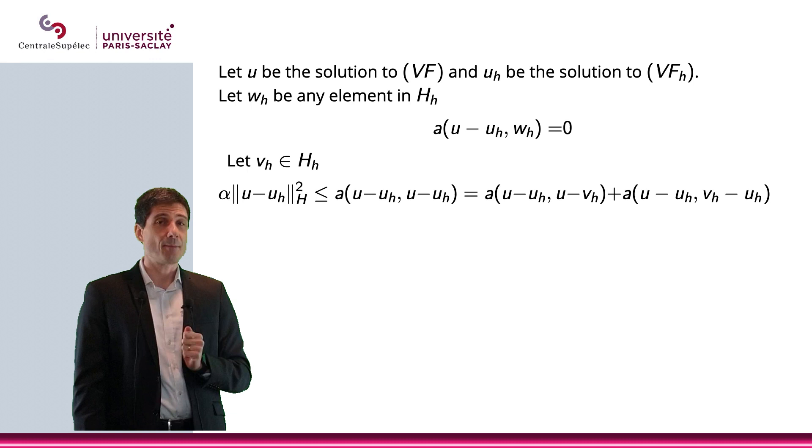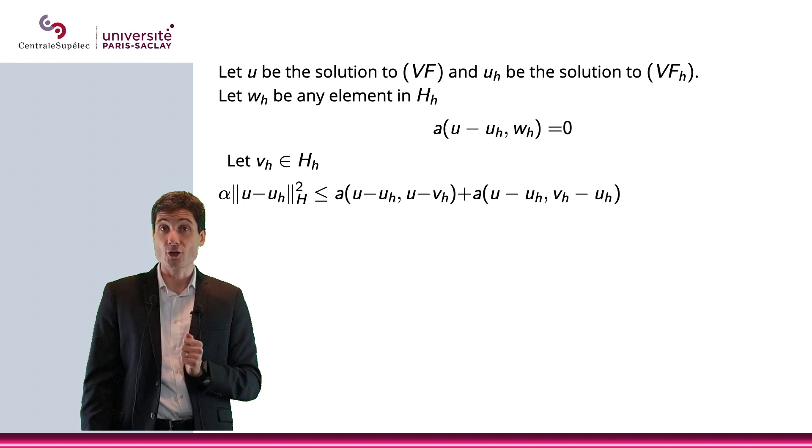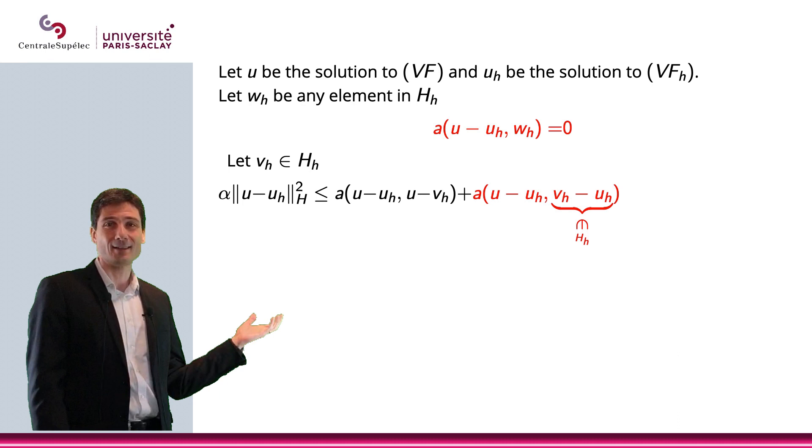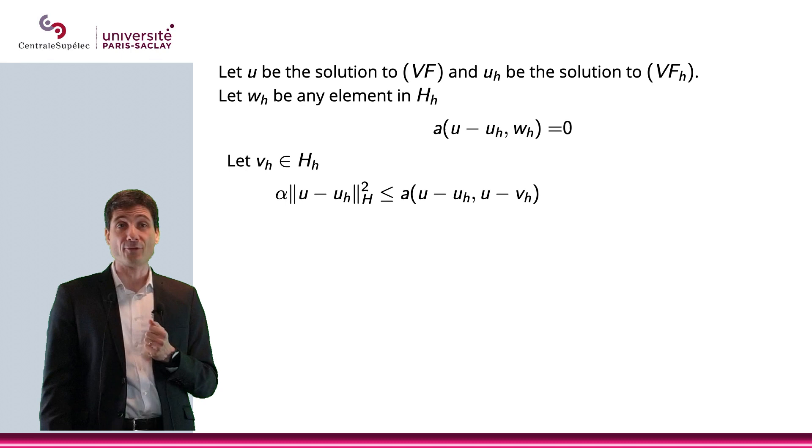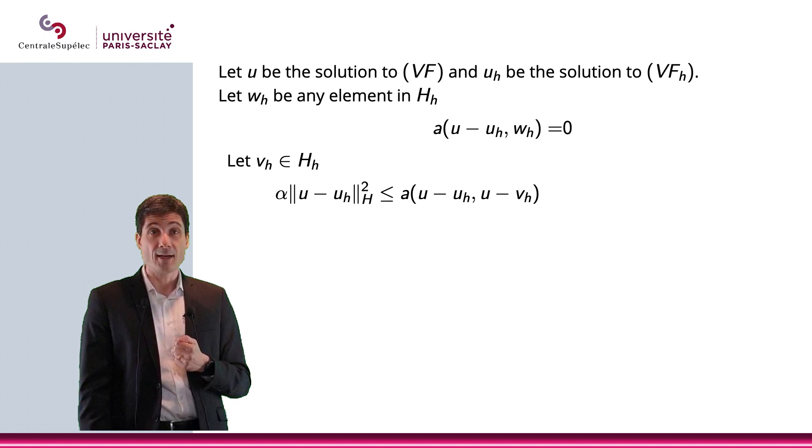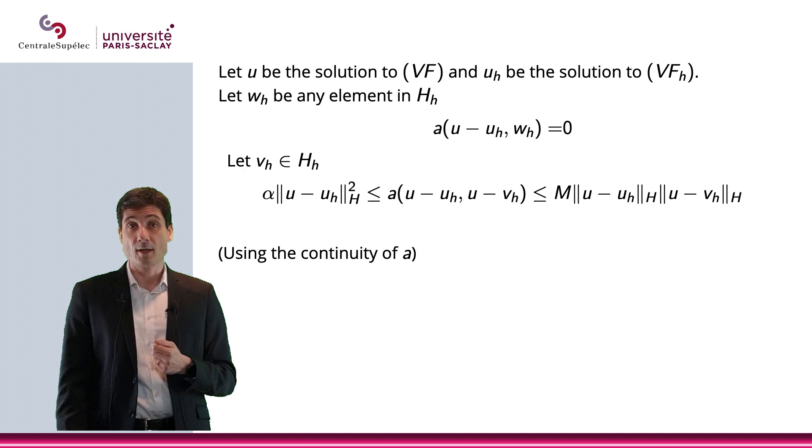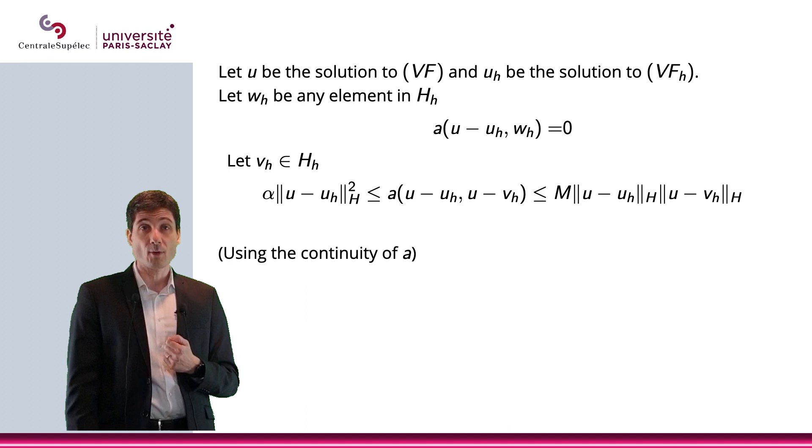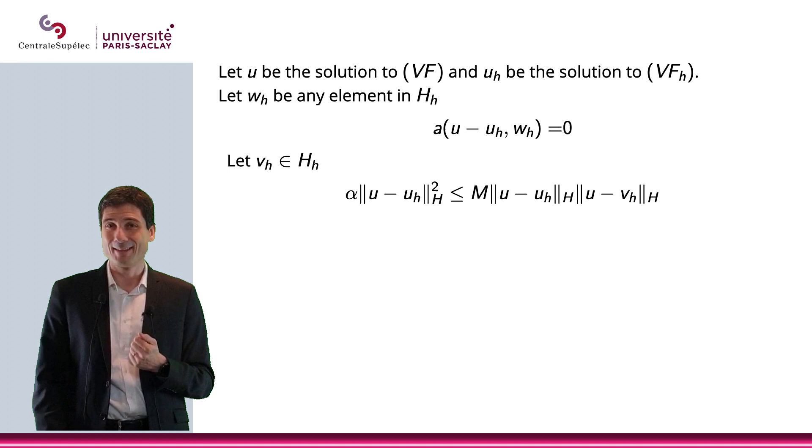But vₕ - uₕ happens to be in Hₕ. So, let's call this wₕ. Obviously, this term will vanish. So, I'm left with α ||u - uₕ||²ₕ smaller than a(u - uₕ, u - vₕ). But now I can apply the continuity of a and say that this will be smaller than M times the norm of u - uₕ times u - vₕ. And when I do this, well, obviously, I'm left with this equation here, this inequality.